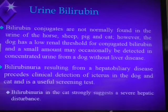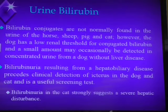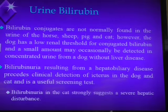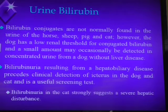We can also use urine bilirubin to give us a feel for what's going on. In the dog, they have a low renal threshold, so they can normally have a trace of bilirubin in their urine. But if you see increased bilirubin on the dipstick from other species, or elevated above trace to 1+ in the dog, that's because you have way too much bilirubin in the blood.